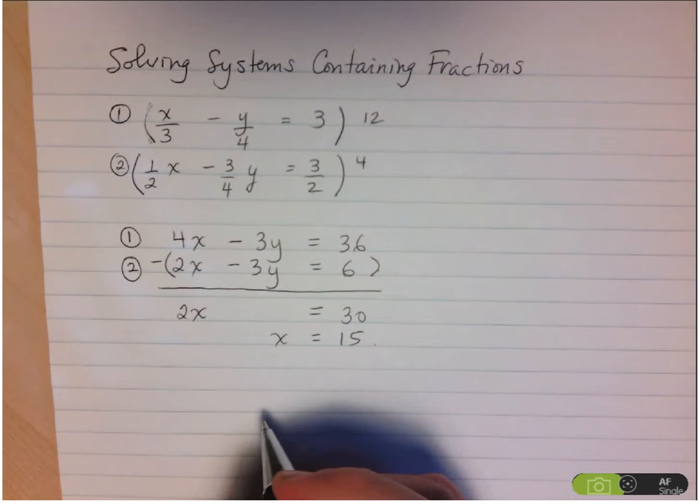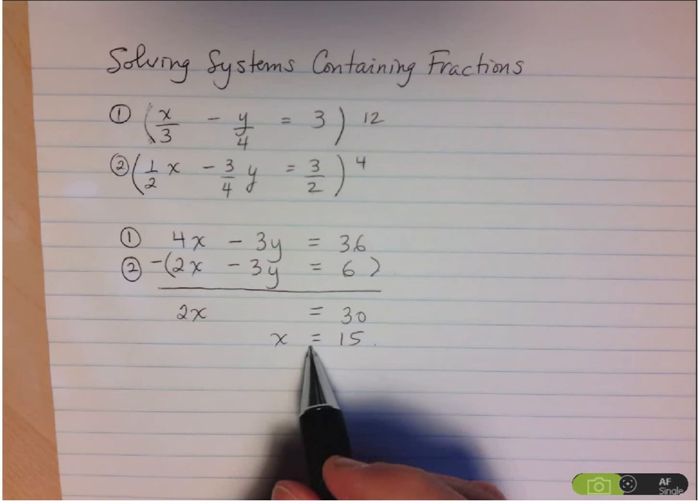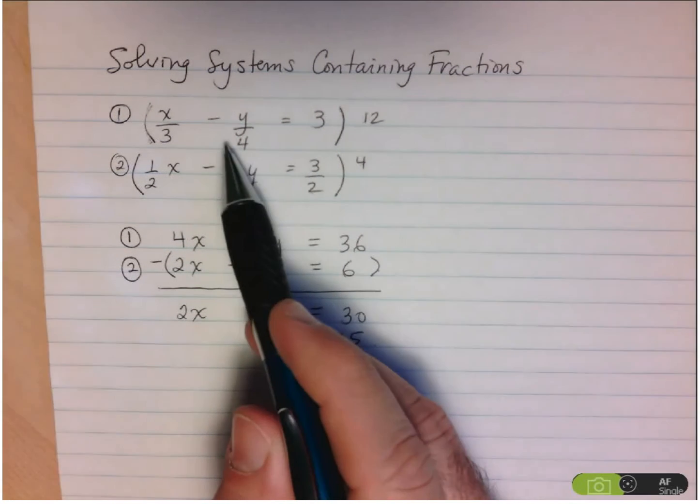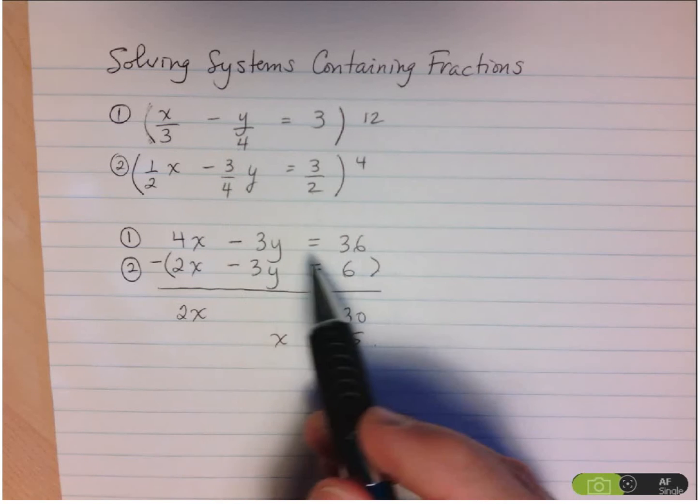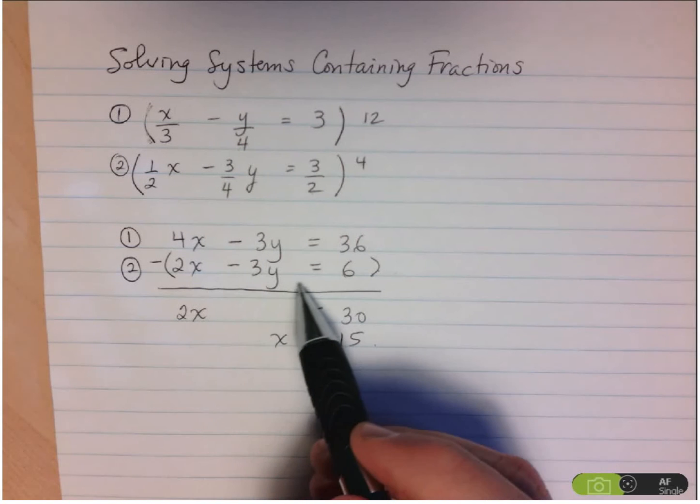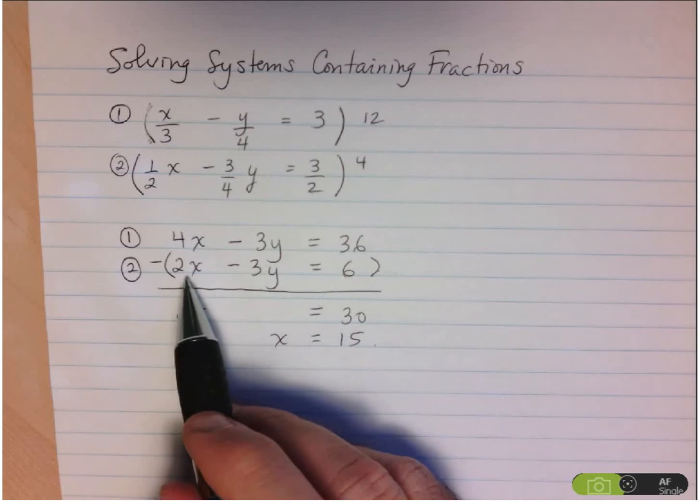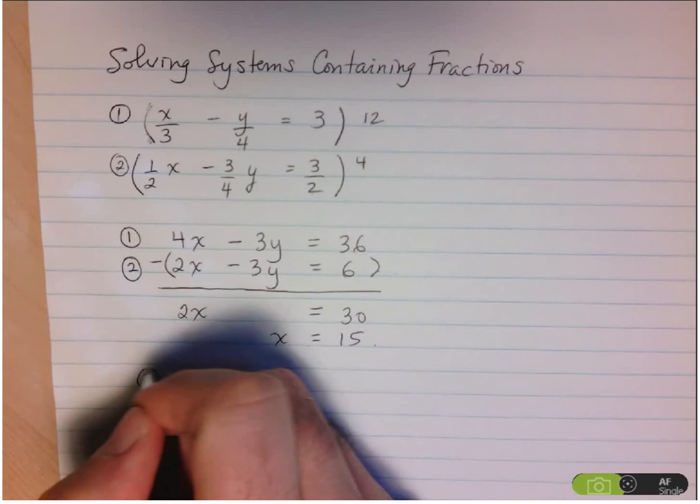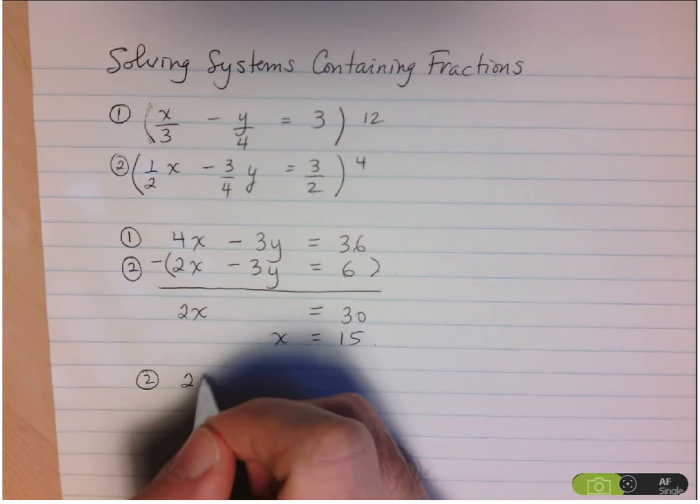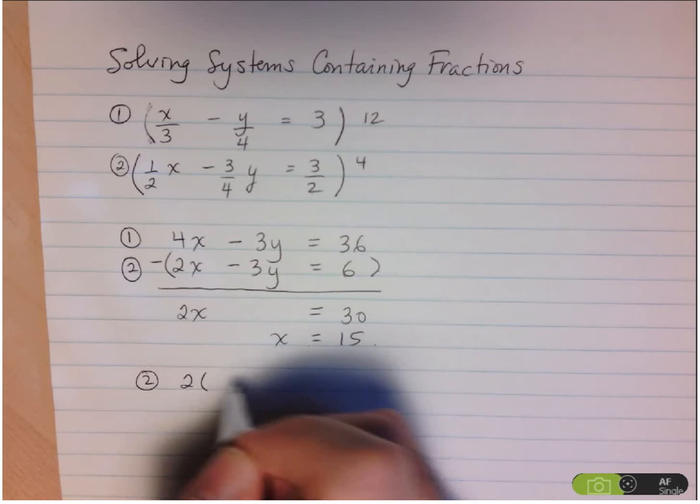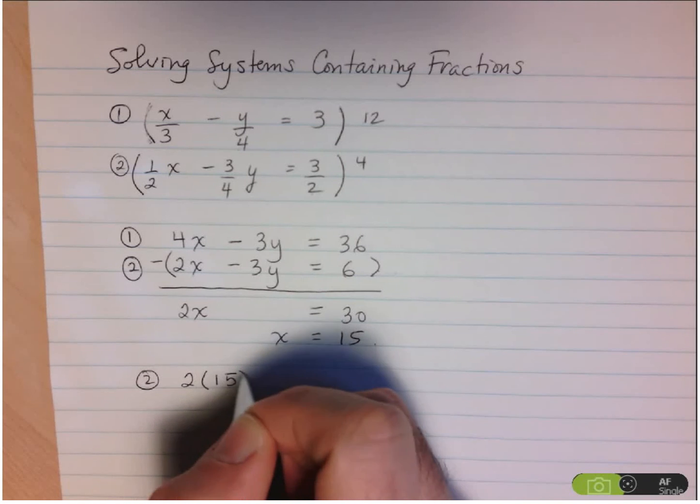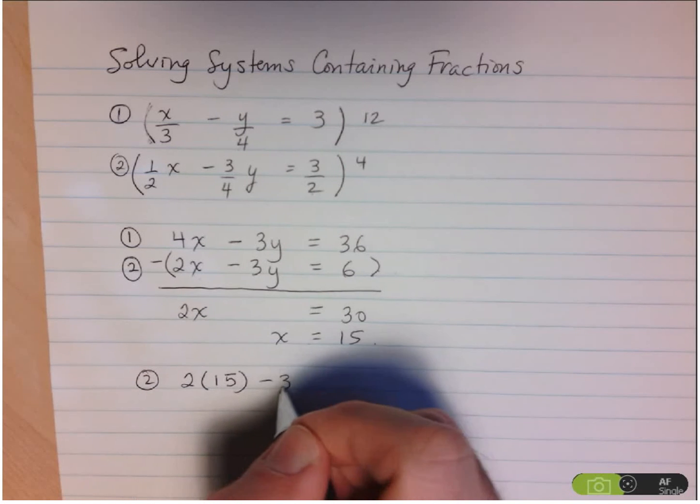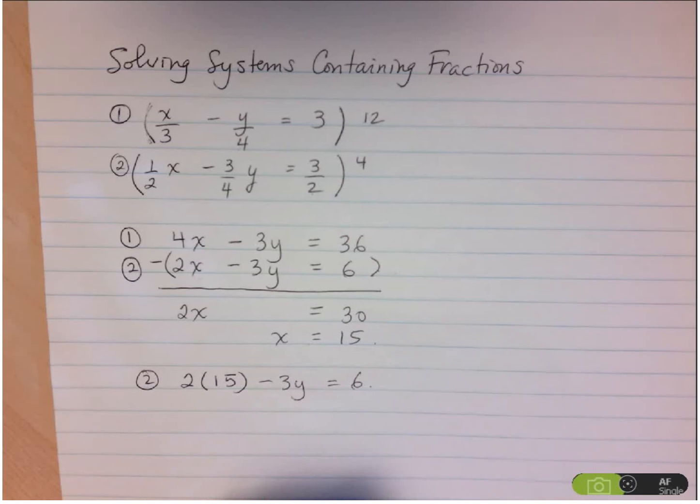And now we'll insert this into one of the equations. Now, instead of inserting it into the equation with the fractions, let's use the ones where we've cleared out the fractions. And I take a look here, and it looks like equation 2 is going to be the simpler one. So I'm going to take equation 2 here, and anywhere I see an x, I'm just going to replace that by 15. So 2 times 15 minus 3y is equal to 6.